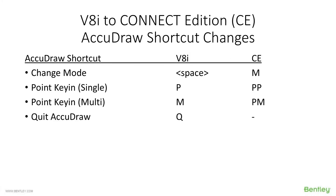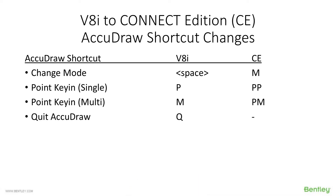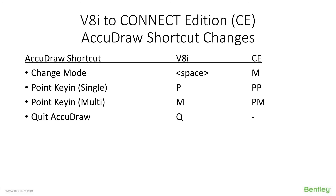From v8i to Connect Edition there have been a few changes. If you're proficient with AcuDraw in v8i, not much has changed. What used to be the Space Bar to change mode between polar and rectangular — you now use M for mode, because Space Bar is now the shortcut for the pop-up tools menu. What was M in v8i was the point key-in multi shortcut.